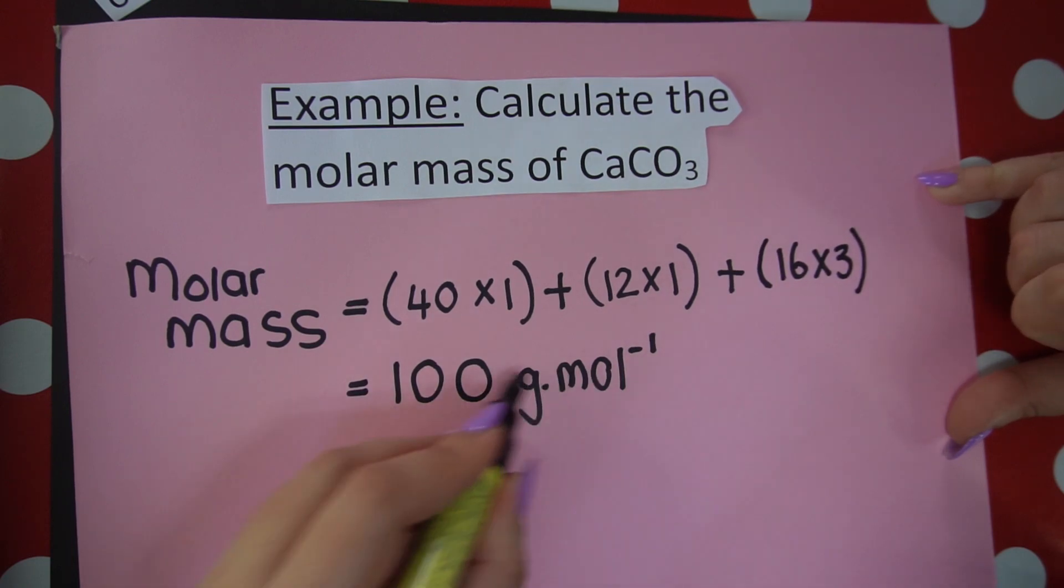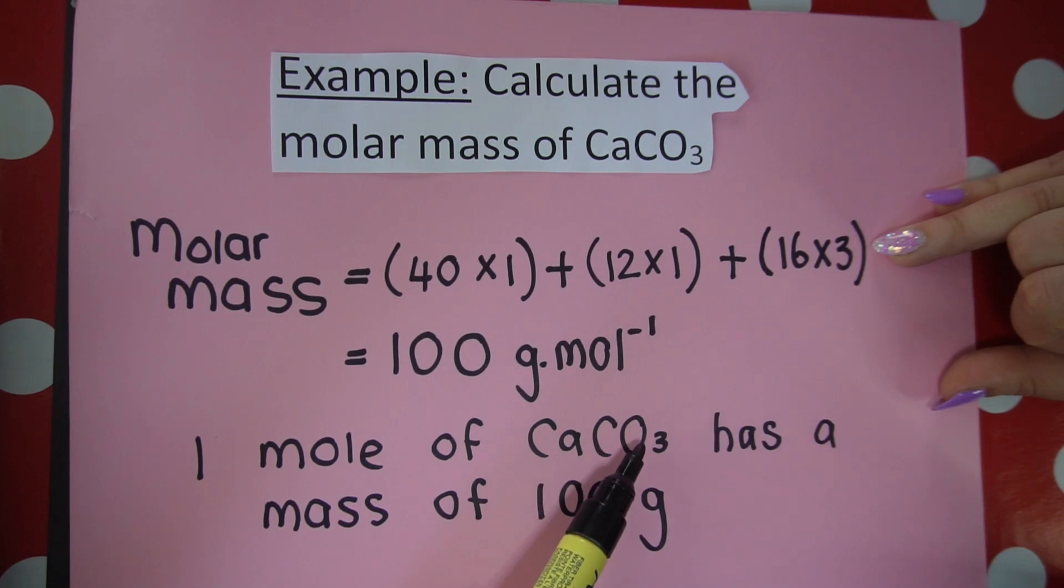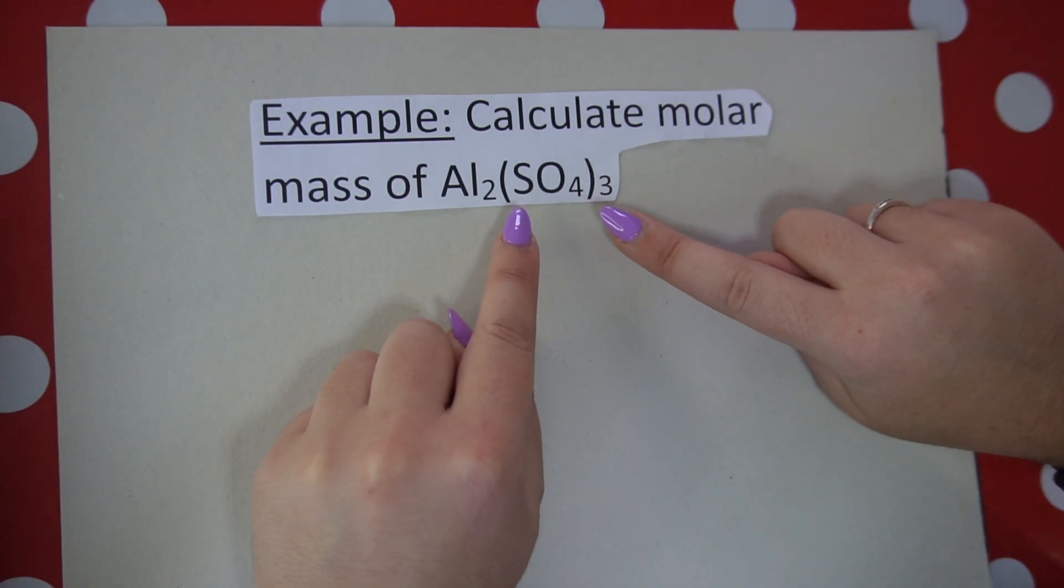Just remember what this means—grams per mole. It means that one mole of calcium carbonate has a mass of 100 grams. Our next example involves brackets or parentheses. It's very important to know how to determine the number of atoms of each element within a compound that has brackets.